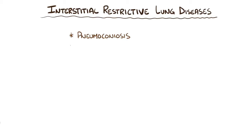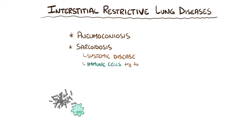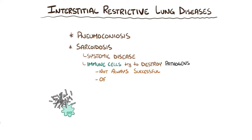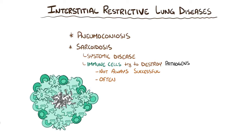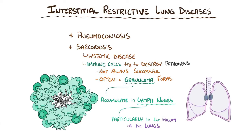A second type of interstitial restrictive lung disease is sarcoidosis, which is a systemic disease with an underlying mechanism that's not well understood. What we do know is that in sarcoidosis, immune cells try to destroy the pathogens or particles but aren't always successful. Oftentimes the pathogen simply gets surrounded by a cluster of macrophages and other immune cells in a sort of standoff called a granuloma. These granulomas accumulate in lymph nodes throughout the body, but particularly in the hilum of the lung. In severe cases, immune cells start releasing proinflammatory cytokines that lead to fibrosis.